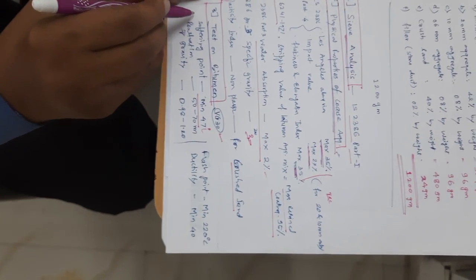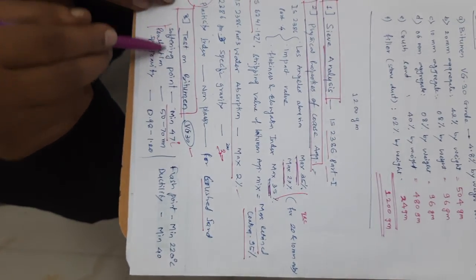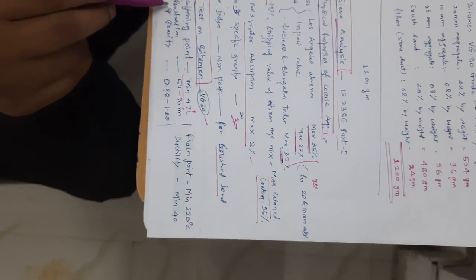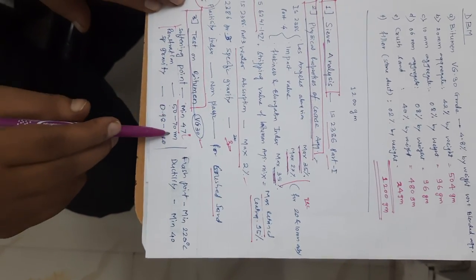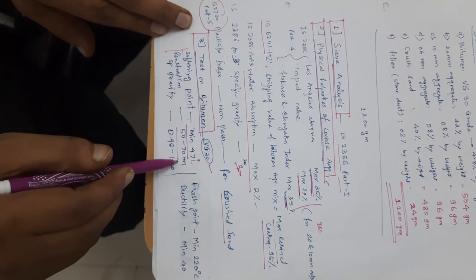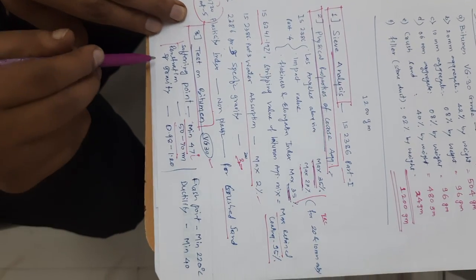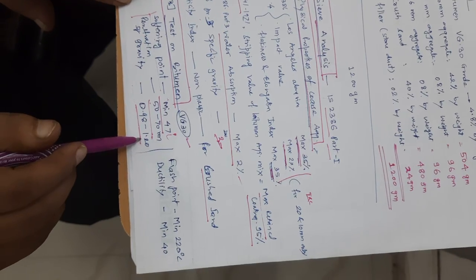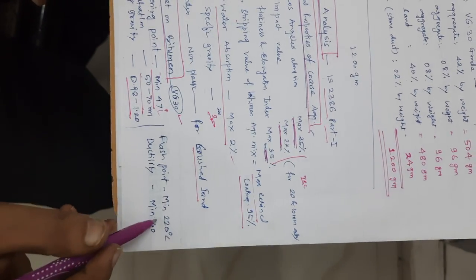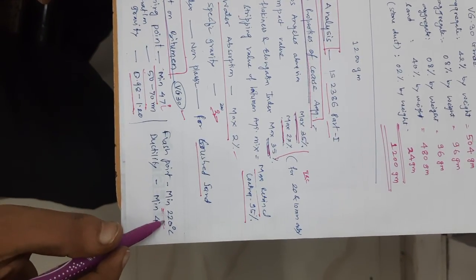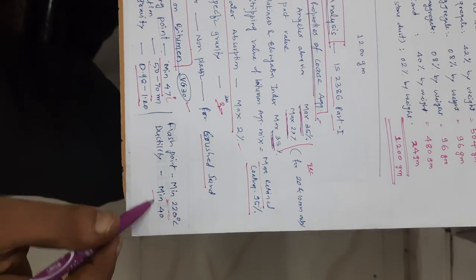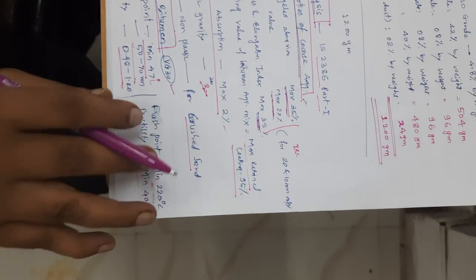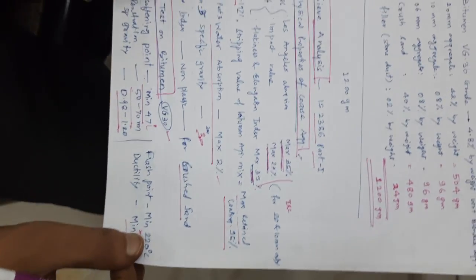We also have to go for the testing of bitumen. We have to find out the softening point — it should be minimum 47 degrees centigrade. The penetration value should be between 50 to 70 mm. The specific gravity should be between 0.99 to 1.2. The flash point is minimum about 220 degrees centigrade. And ductility value should be a minimum of 40 mm. This is about the testing of bitumen.